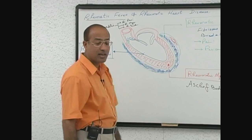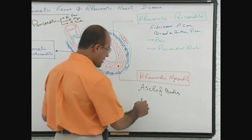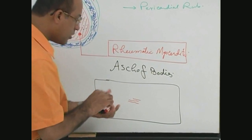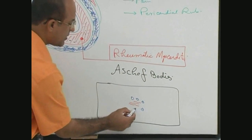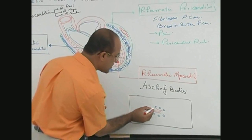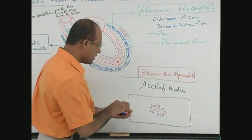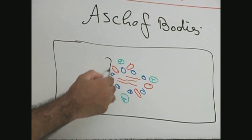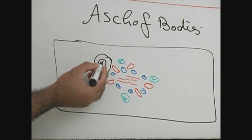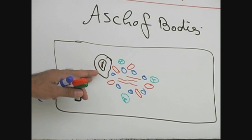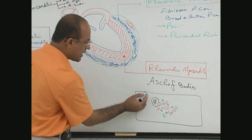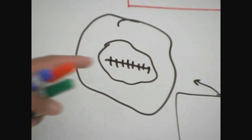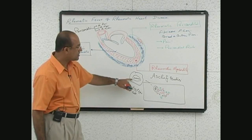Aschoff bodies are very classical lesions of rheumatic carditis. On the slide, you will find swollen collagenous fibers surrounded by inflammatory cells including lymphocytes, plasma cells, and very few neutrophils. More importantly, you find a special type of large macrophage with a very prominent nucleus containing ribbon-like chromatin with small offshoots. It looks like a caterpillar, so these cells are also called caterpillar cells.